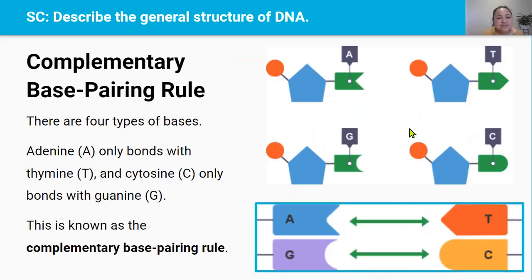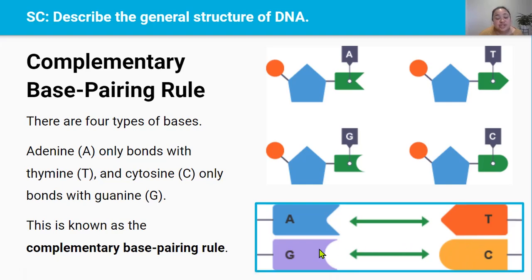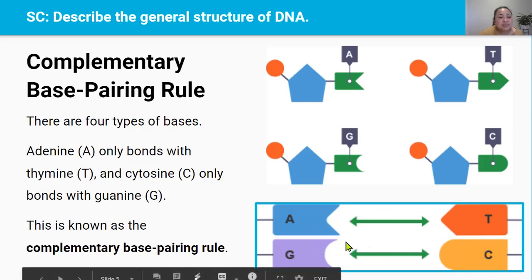There are four types of bases: adenine, thymine, cytosine, and guanine. Adenine is symbolized by an A, and it only forms hydrogen bonds with thymine. Cytosine is represented by a C, and it only forms hydrogen bonds with guanine, which is symbolized by a G. This base pairing rule is called the complementary base pairing rule, and it always applies in DNA.